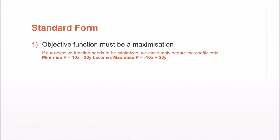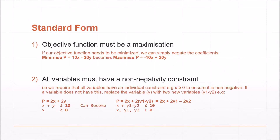Number 1: our objective function must be a maximisation. If we're presented with a minimisation problem, we can simply convert it into a maximisation problem by negating the coefficients in the objective function.